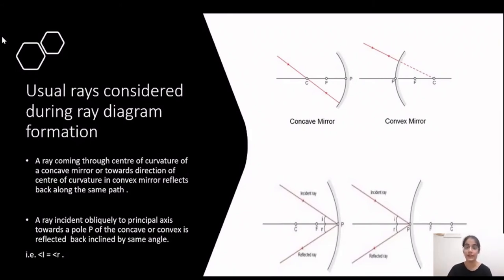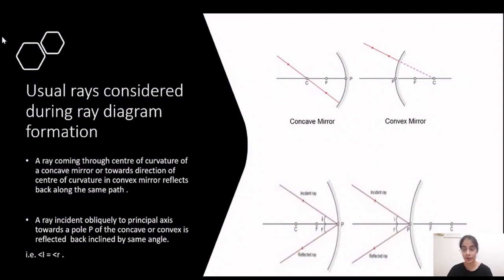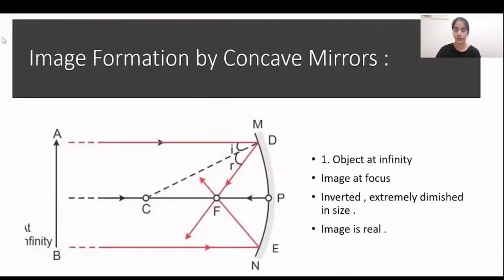These are the four types of rays whose behavior we know, and all four will help us form and understand images easily by determining the intersection of reflected rays. Now let us go to image formation by concave mirrors.